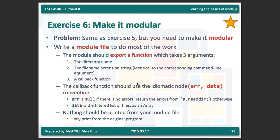The module file should export a function that takes three arguments. The first argument is the directory name, since we need an input directory. The second argument is the file name extension string, to specify what file extension we want to see. The final argument is a callback function for the user to specify. The callback function uses two arguments: error and data — this is a convention in Node.js. Error represents errors when filtering; if there are none, set it to null. Data is the filtered list of files as an array. Nothing should be printed from your module file.